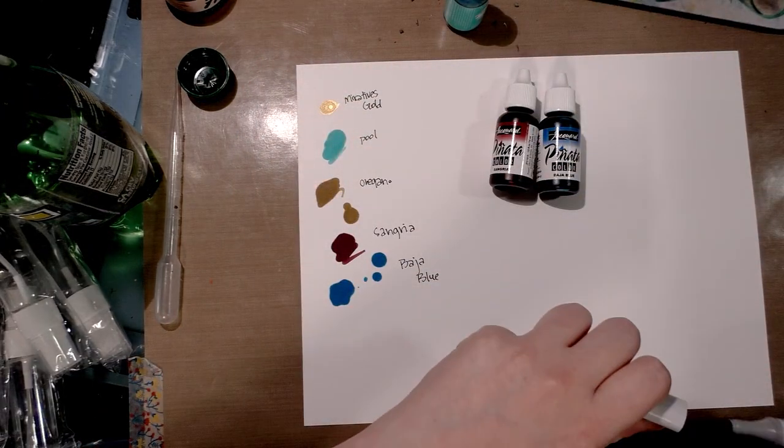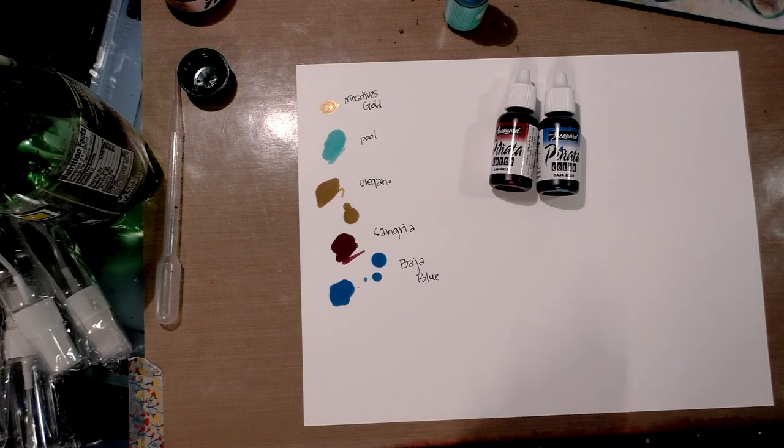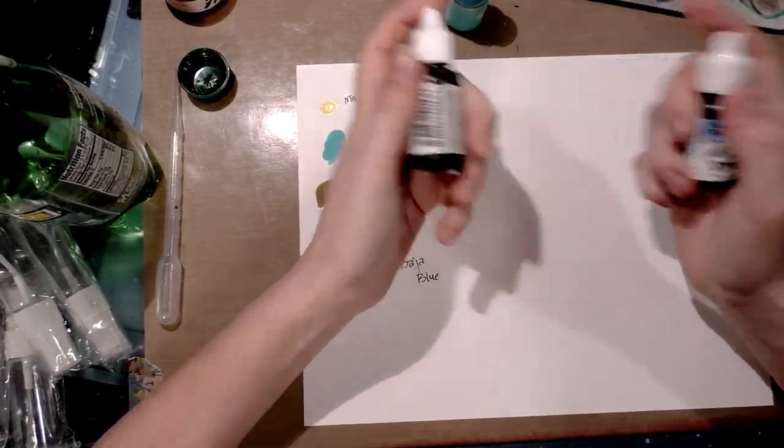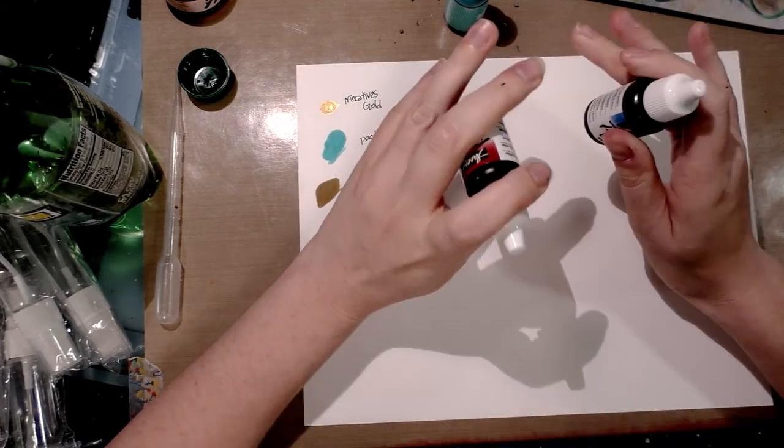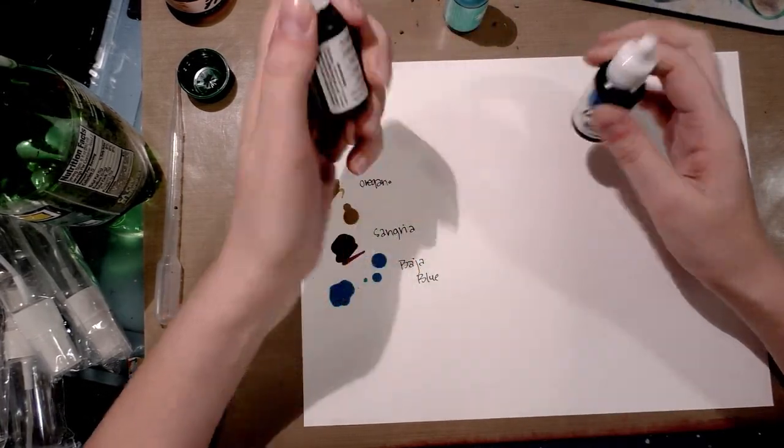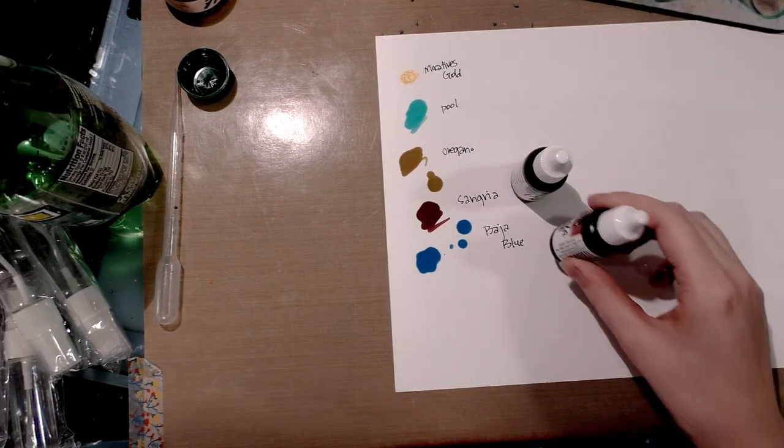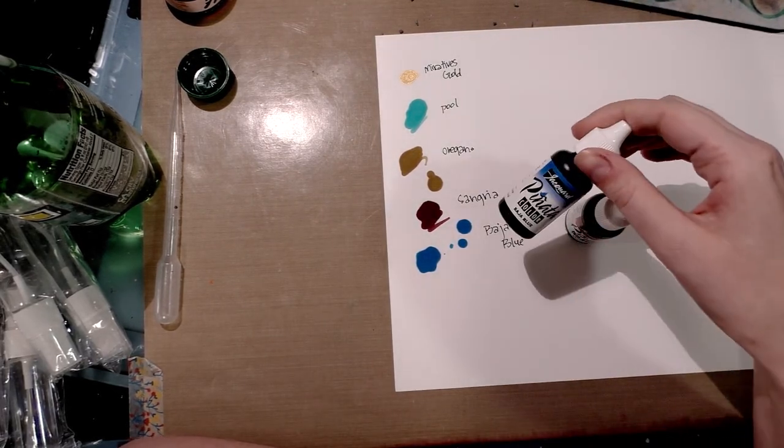Jacquard also makes alcohol inks. They're called Pinata Color. They come in a variety of colors. I don't know off the top of my head how many colors, but you can see some samples here. They are vibrant, beautiful alcohol inks.